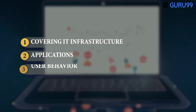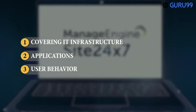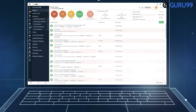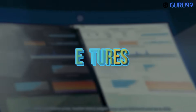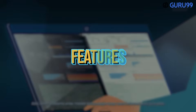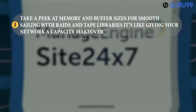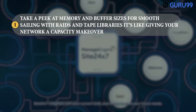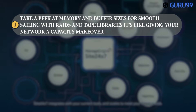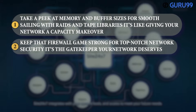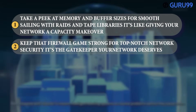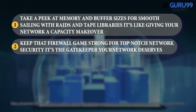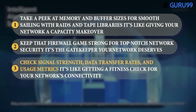Experience automatic discovery, inventory creation, and network mapping — all without the manual hassle. It's the whole package: take a peek at memory and buffer sizes for smooth sailing with RAIDs and tape libraries — it's like giving your network a capacity makeover. Keep that firewall game strong for top-notch network security. Check signal strength, data transfer rates, and usage metrics — it's like getting a fitness check for your network's connectivity.